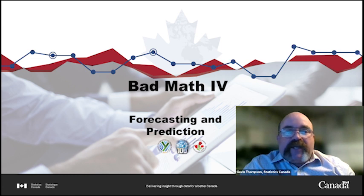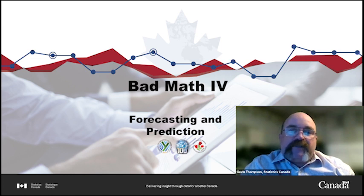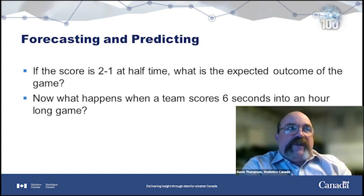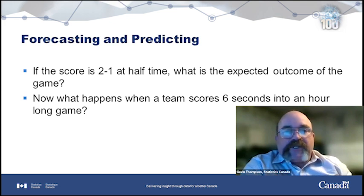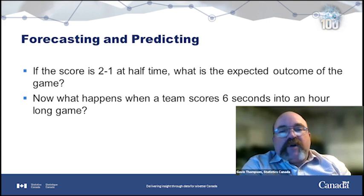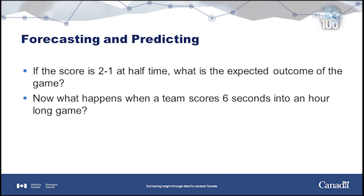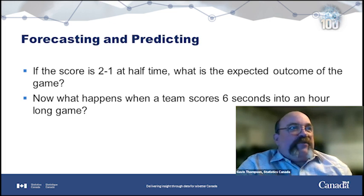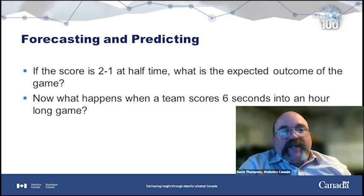As with all my presentations, I like to start with some bad math. So in this example I'm going to talk about forecasting and prediction. If the score is two to one at halftime, what is our expected outcome in a game — football or soccer? And what happens when a team scores six seconds into an hour-long game? No one can really predict what's going to happen, but when we talk about forecasting and modeling, we're saying: based on the evidence we have already, what's going to happen?